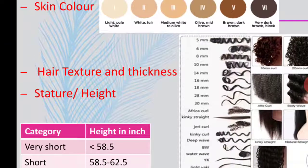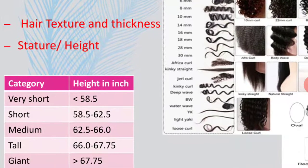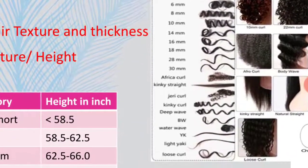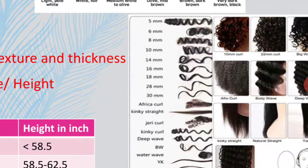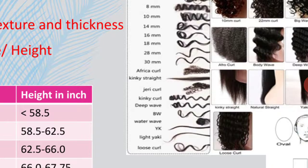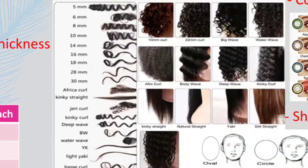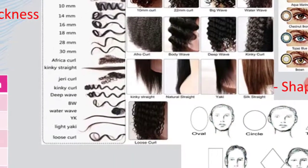Then you can use hair texture and thickness. In this column I am giving some of the different thicknesses of human hair, ranging from 5 mm to 30 mm. Again there are different types of hair textures starting from African curl, kinky, straight and intervening ones. You can see pictures of different types of curls, then wavy hair and straight hair also.